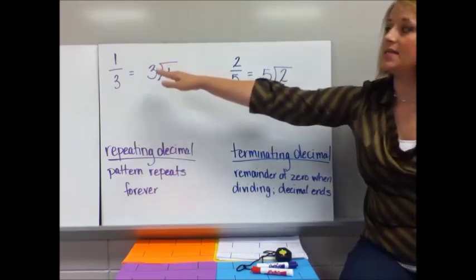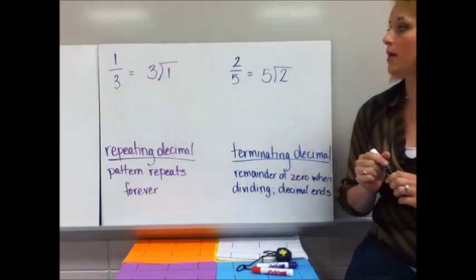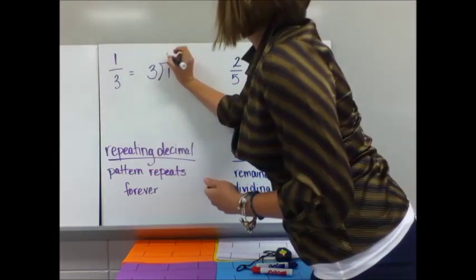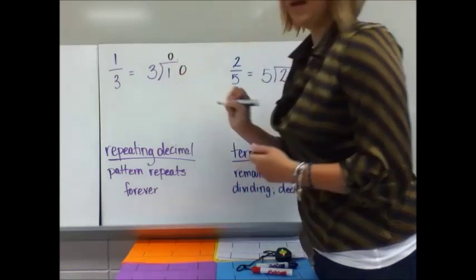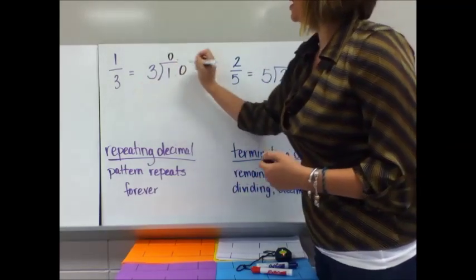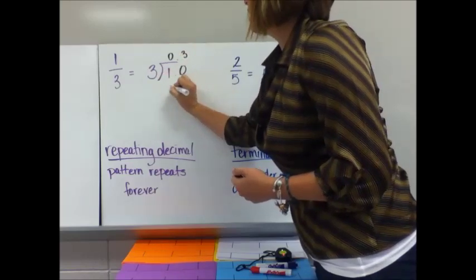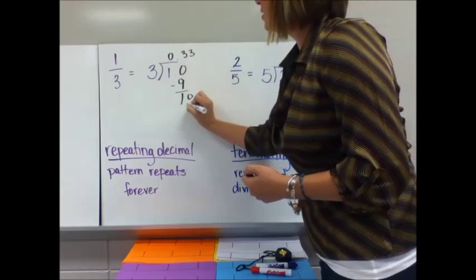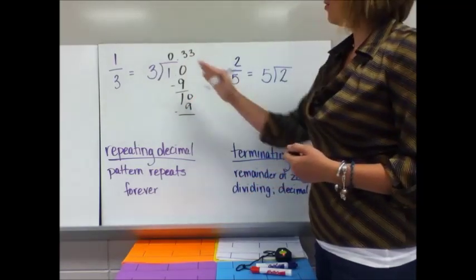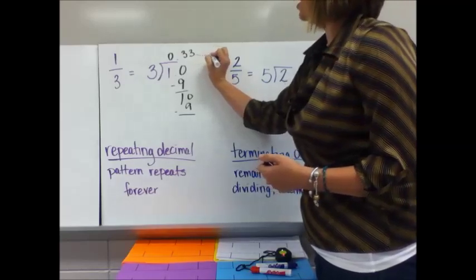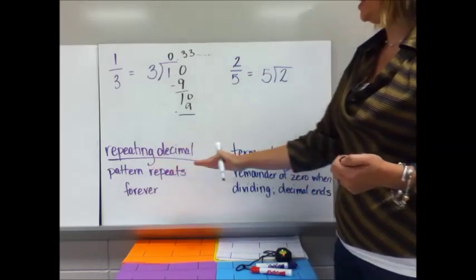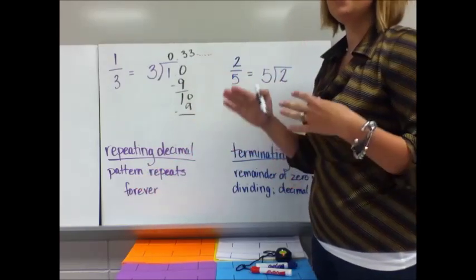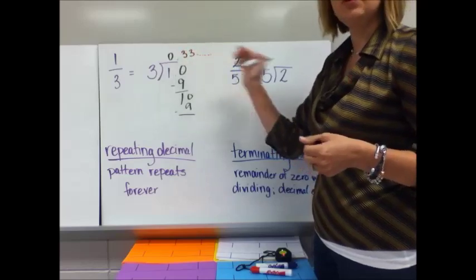Let's practice with these. Let's take something like one-third. The top number goes in the box. Three goes into one zero times. I annex a zero. Three goes into 10 three times. Three times three is nine. Subtract, I get one. I bring down a zero. Three goes into 10 three times again. You're probably starting to see a pattern — this is just going to go on and on. This is what we call a repeating decimal. There is a pattern in the decimal that repeats forever.